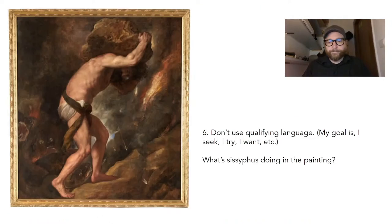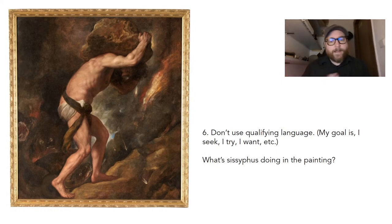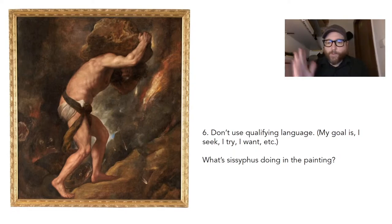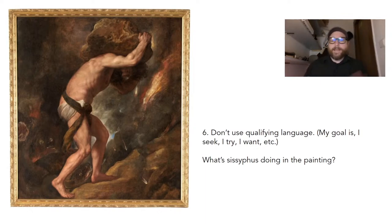Don't use qualifying language — things like 'my goal is,' 'I seek,' 'I try,' 'I want.' Speak directly to what you are doing. Don't say 'I really want to convey' — that's too many words and you're hedging. Like Yoda says: there is no try, only do. Talk about yourself that way in an artist statement. It shows confidence and it's also shorter and more concise.